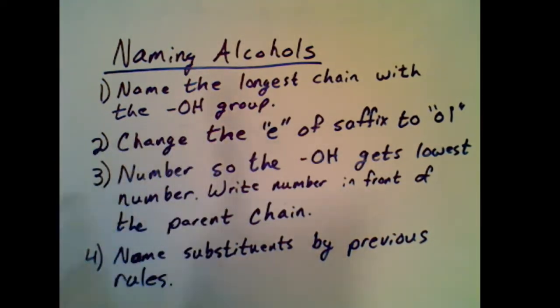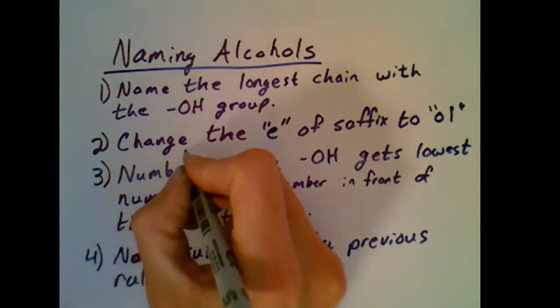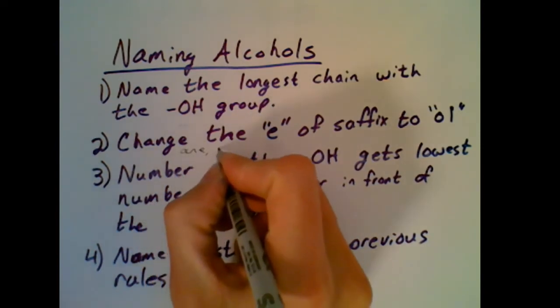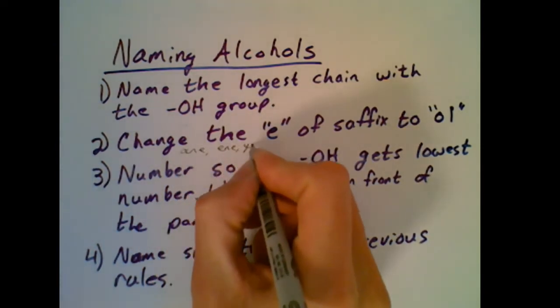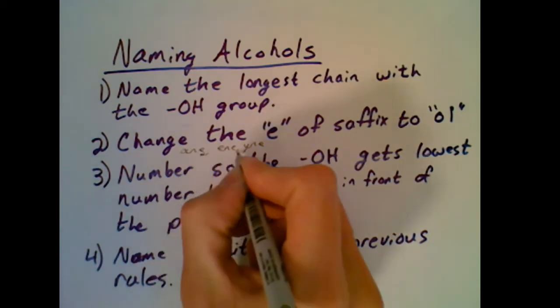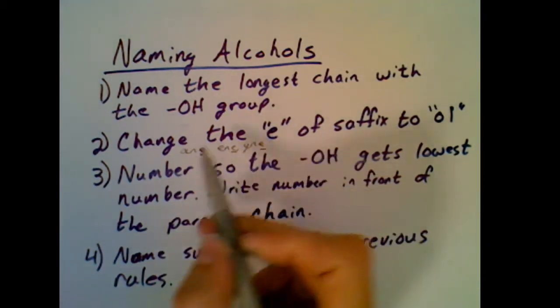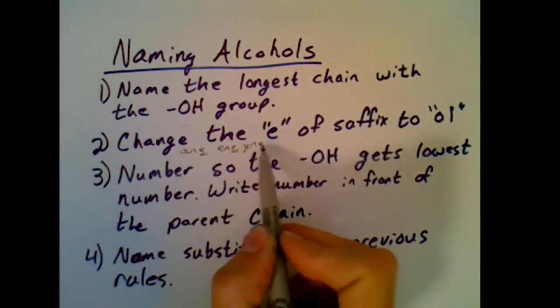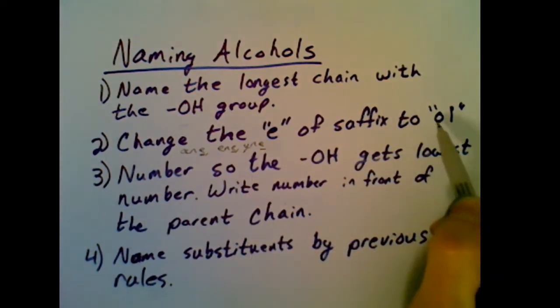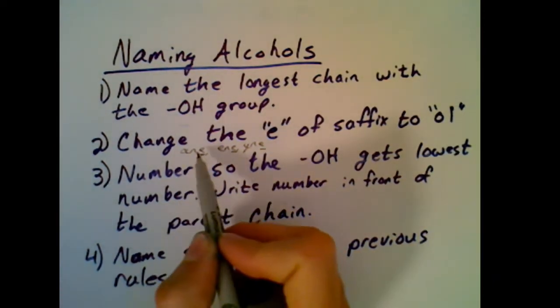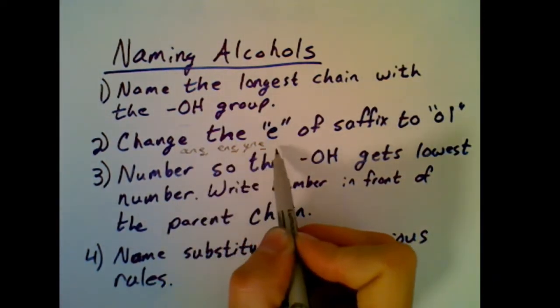We've been using suffixes that have things like A-N-E or E-N-E or Y-N-E. And what we're going to do to show it's an alcohol is change that E ending to O-L to make anol, enol, or inol.